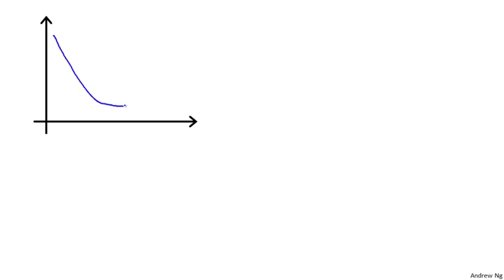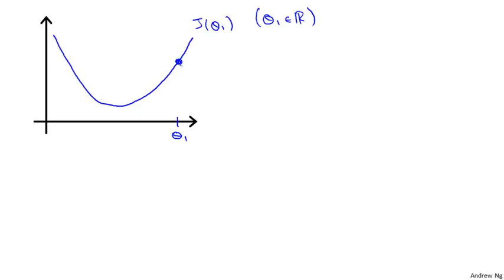Let's say here's my function j of theta one, where theta one is a real number. I've initialized gradient descent with theta one at this location — imagine we start off at that point on my function. What gradient descent will do is update theta one as theta one minus alpha times d/dθ₁ of j(θ₁).